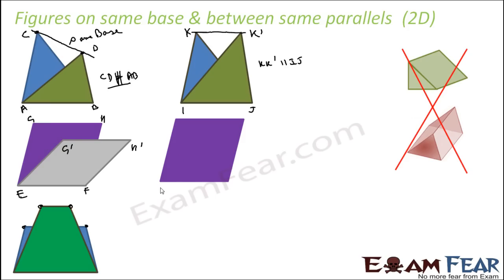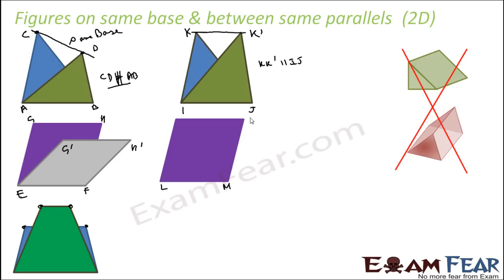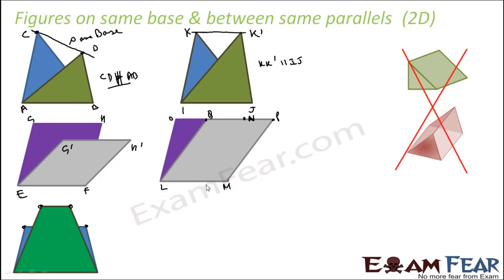For the parallelogram example, let LM be the base. If you draw another parallelogram on the same base, you can check: the vertices P, Q, N, O all lie on one line, and since it is a parallelogram, PQ is parallel to LM and NO is parallel to LM, so the entire line PO is parallel to LM. This is the case of common base and between the same parallels.